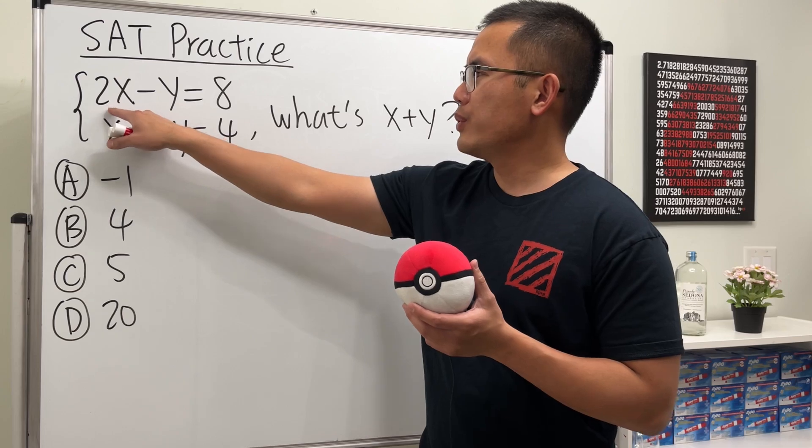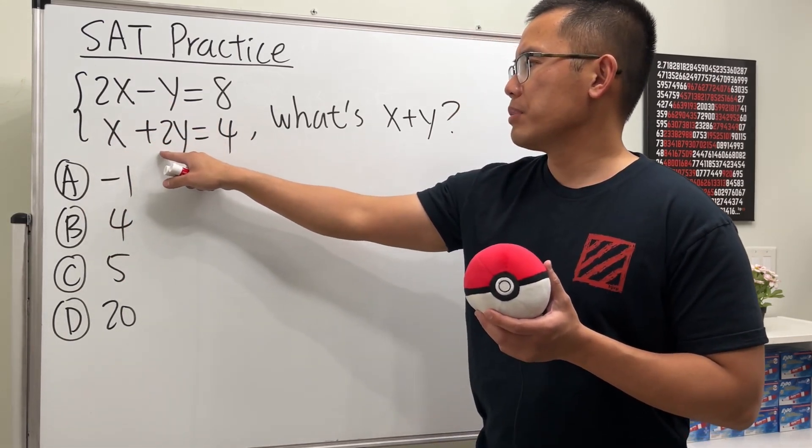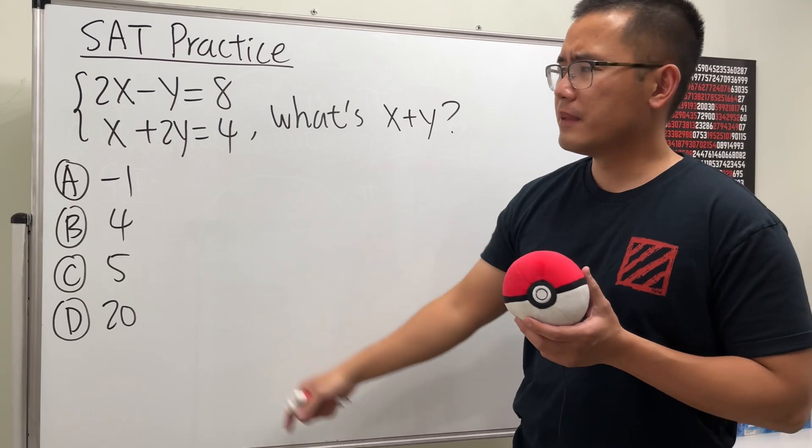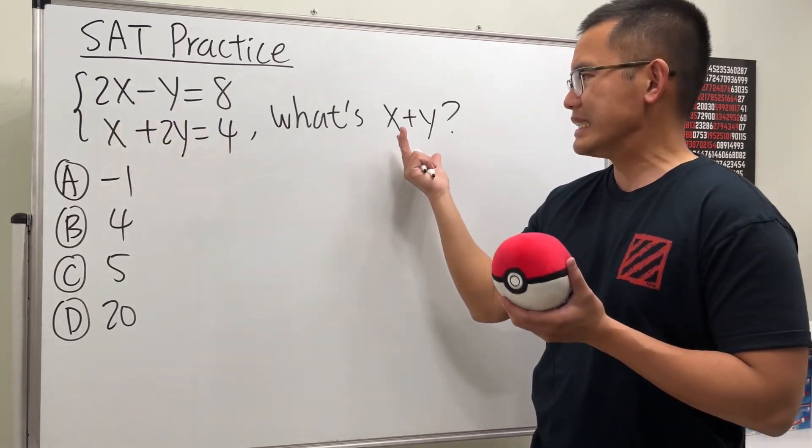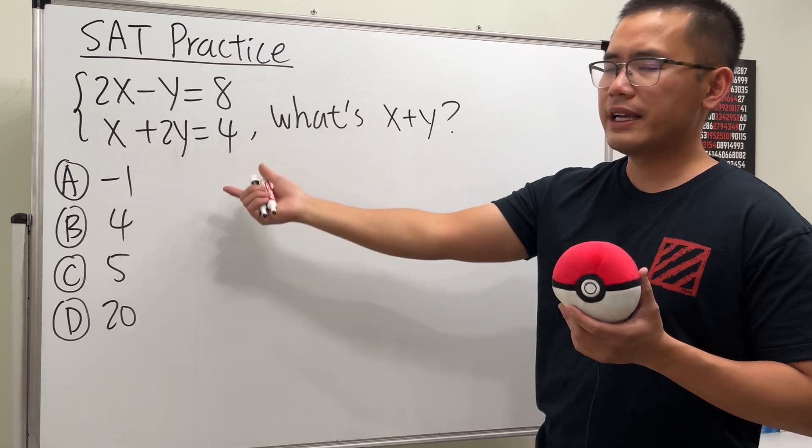add the equations, 2x plus x is 3x, and negative y plus 2y is positive y. So 3x plus y does not give us this. So we'll just solve for x and solve for y, and at the end we'll add them up. That's all.